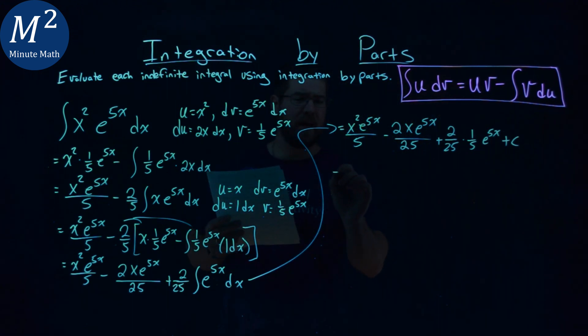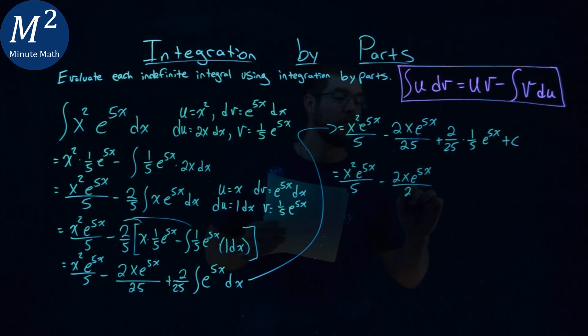Now we can just combine or simplify this a little bit. It's just algebra at this point: x squared e to the 5x over 5 minus 2x e to the 5x over 25,